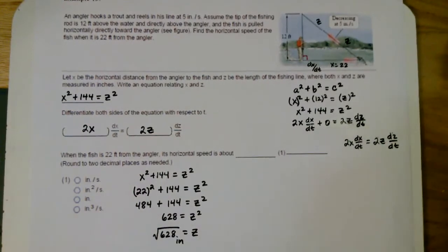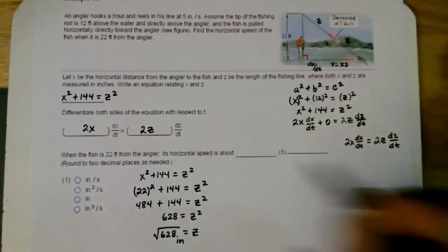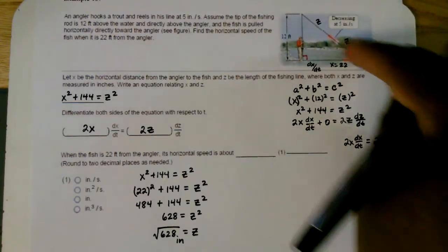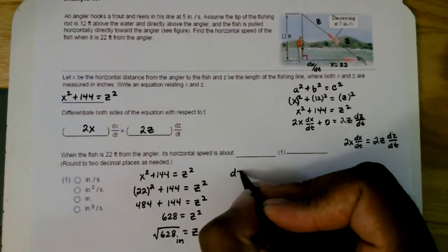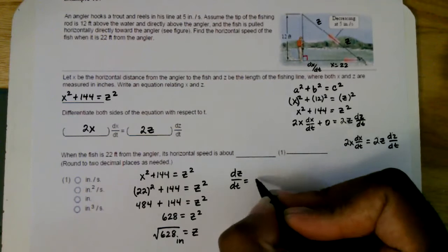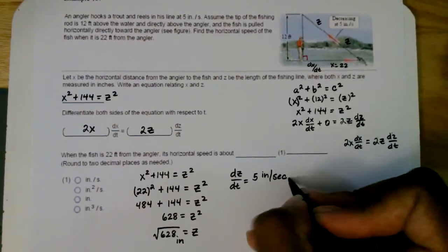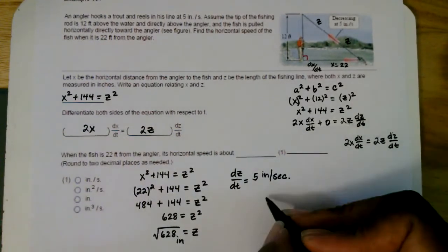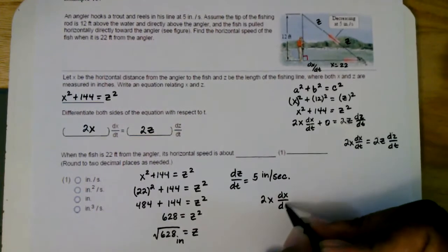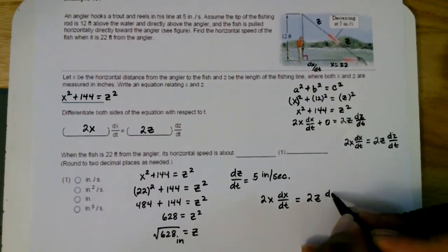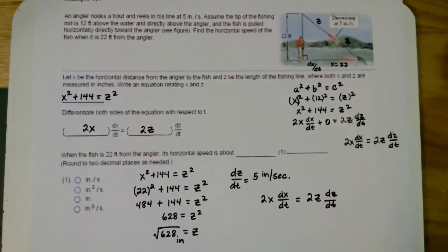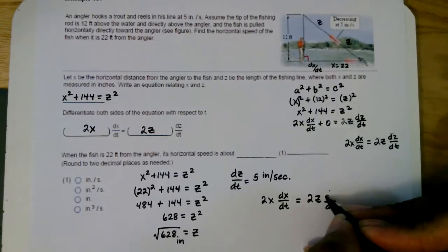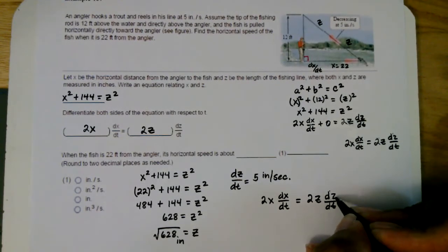Now let's look at what we already know. We're told that the angler hooks the trout and reels in his line at five inches per second. That's going to be dz/dt, as indicated here. So dz/dt is 5 inches per second.